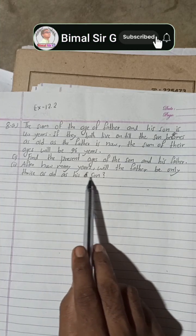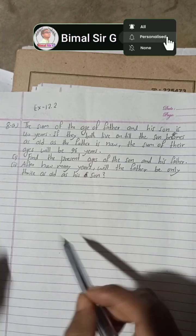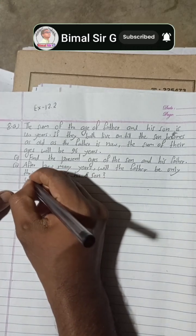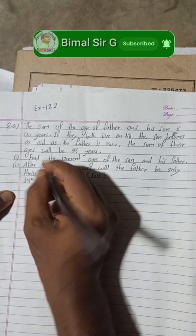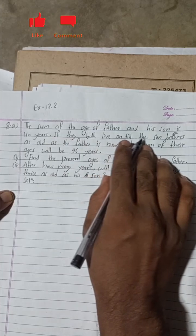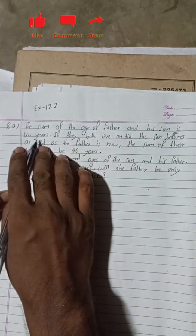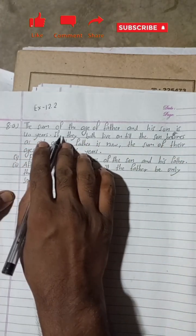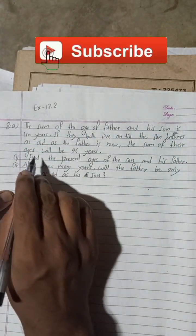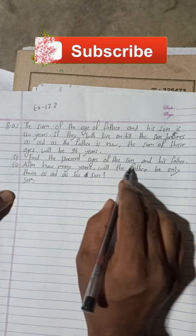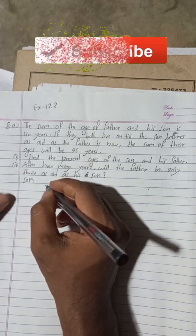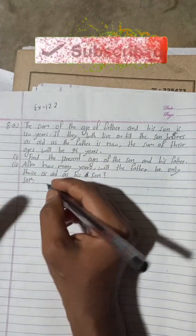In this case, the sum of the ages of the father and his son is 40 years — this is the present condition. So to find the present age of the son, we can suppose: let the present age be...